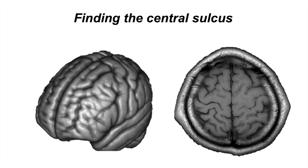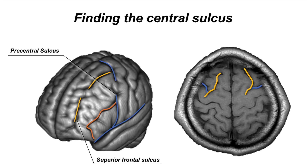This anatomical knowledge can be readily applied to finding the central sulcus on MRI. When the brain is observed in an axial plane, the precentral sulcus can be appreciated as an oblique sulcus intersected by a vertical sulcus corresponding to the superior frontal sulcus. The central sulcus is the oblique sulcus located posteriorly.